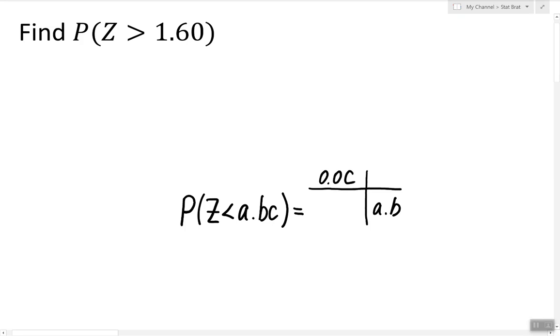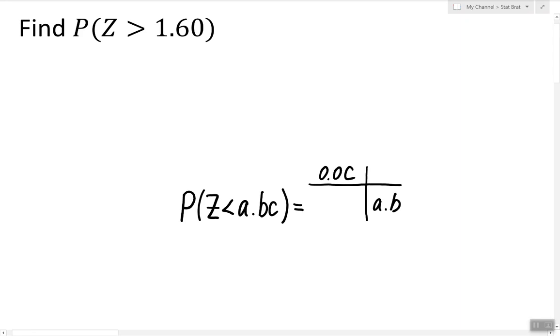In our case we have the question asking to find the probability of z being greater than some number. Since the inequality is greater than, we cannot directly look in the table for the answer to this question.